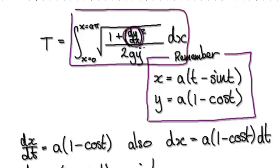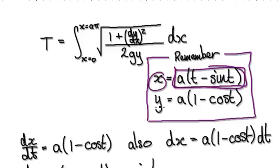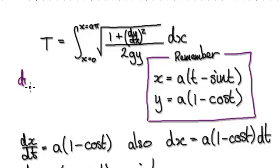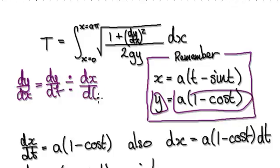In order to evaluate this, we need to find dy by dx. When we're working with parametric equations, everything is given in terms of t. So x is in terms of t and y is in terms of t. To work out dy by dx, we need to work out dy by dt, because y is given in terms of t, and then dy by dx equals dy by dt divided by dx by dt.